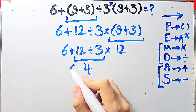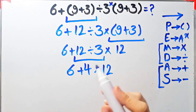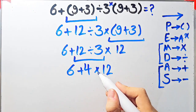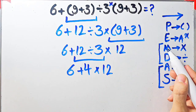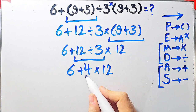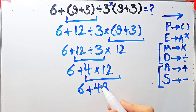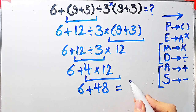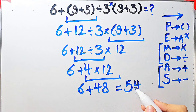Now we have 6 plus 4 times 12. We have addition and multiplication. Since multiplication has higher priority than addition, we do 4 times 12 first: that equals 48. Now we have 6 plus 48. 6 plus 48 equals 54. The final answer of this question equals 54.